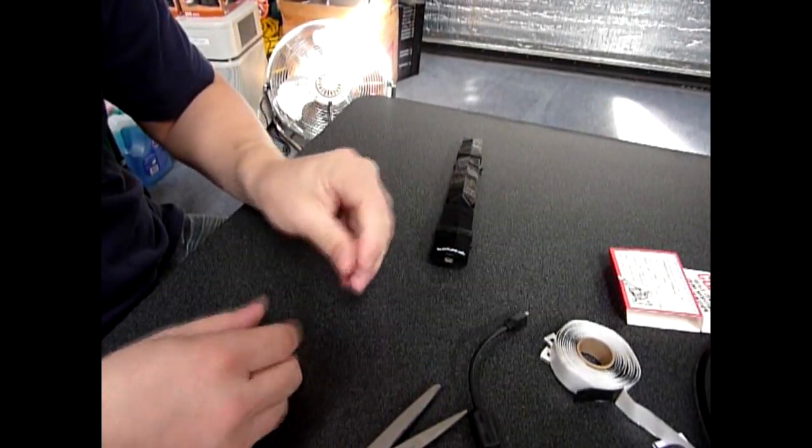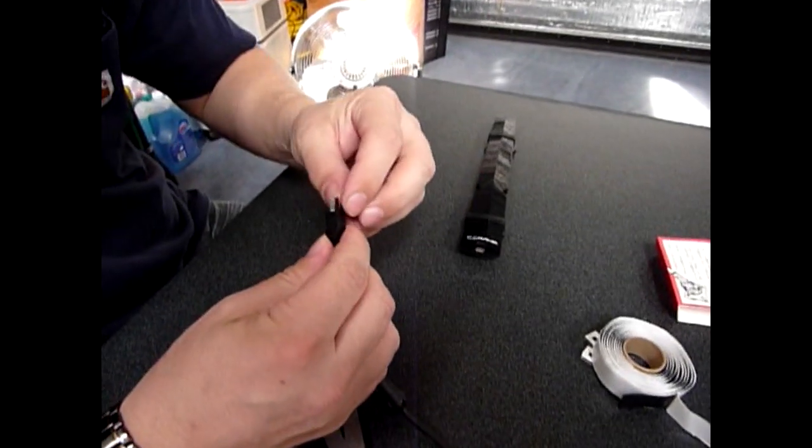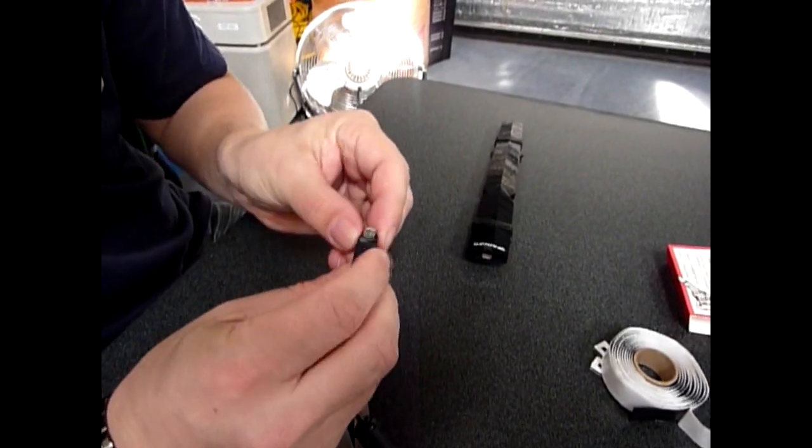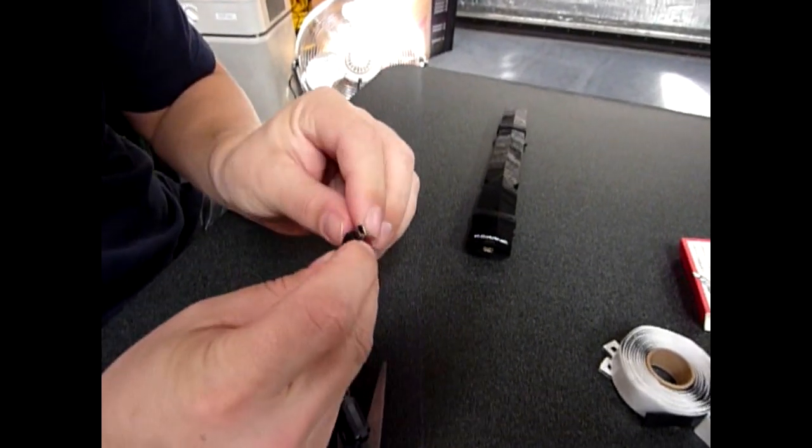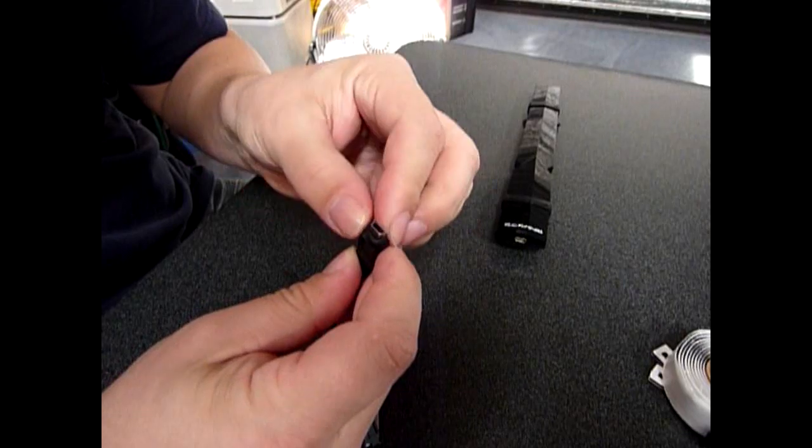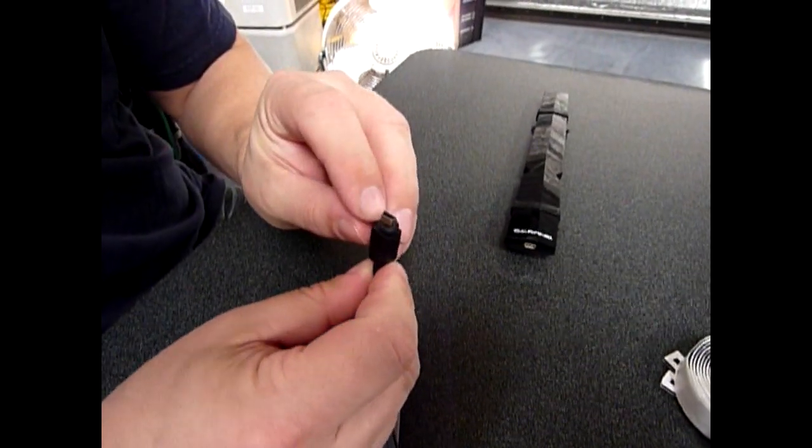You're just going to roll it in a little bead and you're going to put it around the outside of the connector. There. It's all nice and pretty.